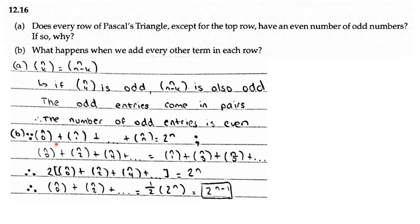Both halves added together equal 2 to the power of n. So 2 times the sum of every other term also equals 2 to the power of n, which means n choose 0 plus n choose 2 plus n choose 4 and so on equals half of 2 to the power of n, which is 2 to the power of n minus 1.